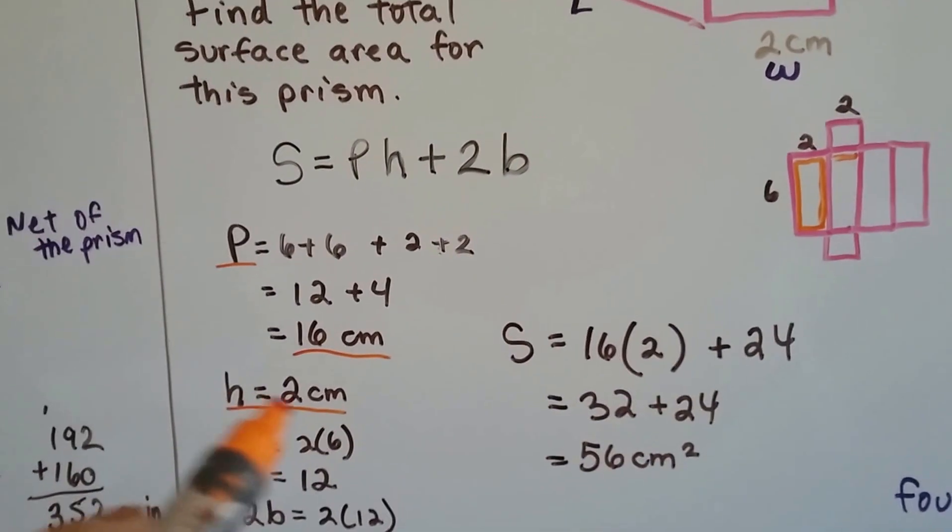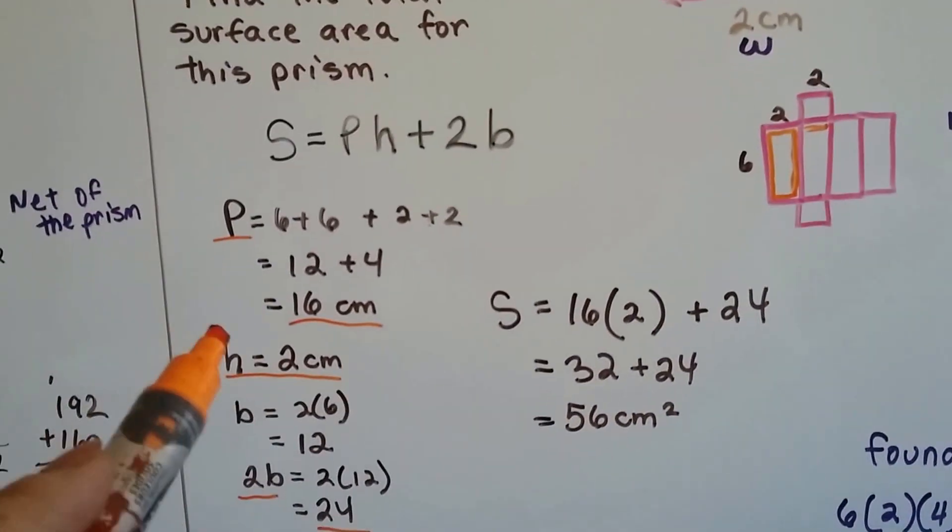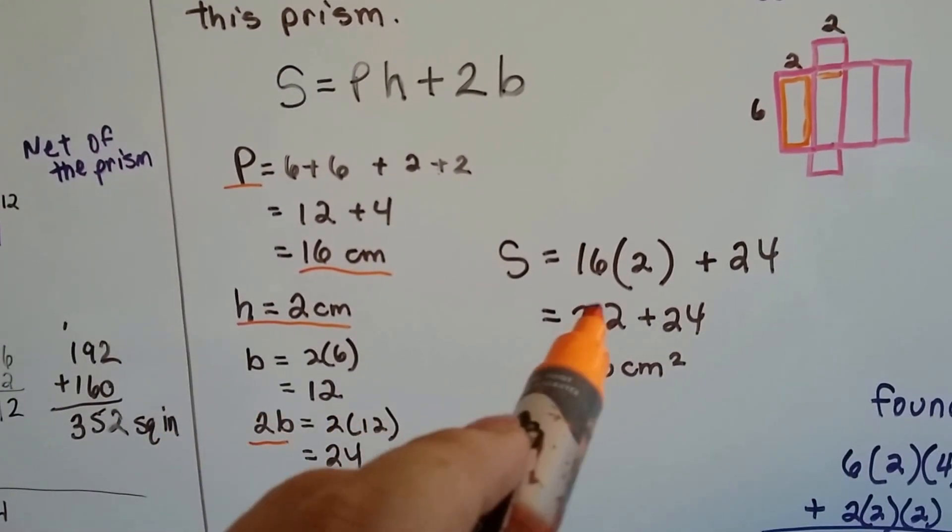Now we have to multiply it by the height, and the height was 2. 16 times 2 is 32.